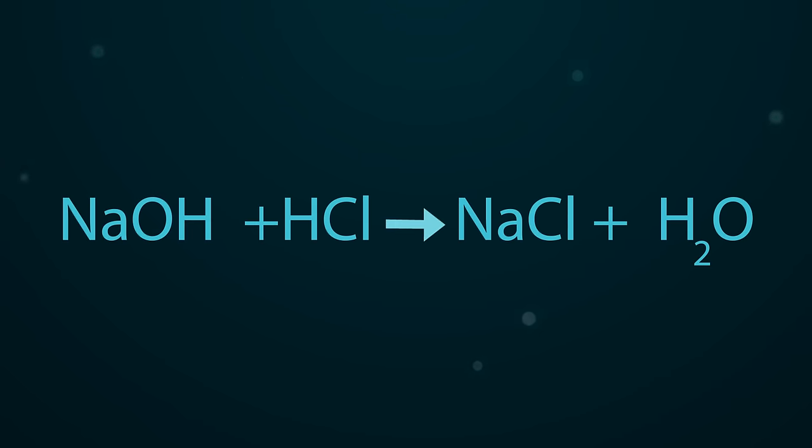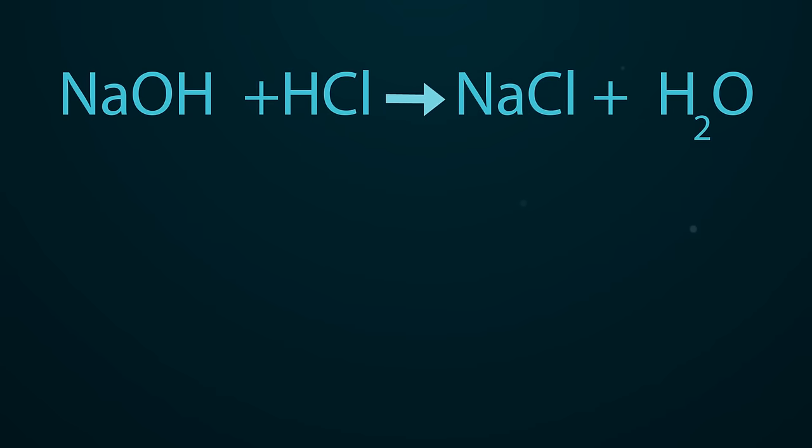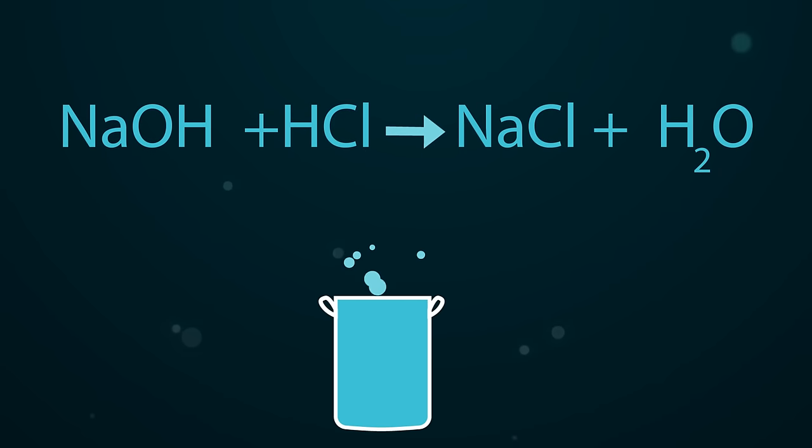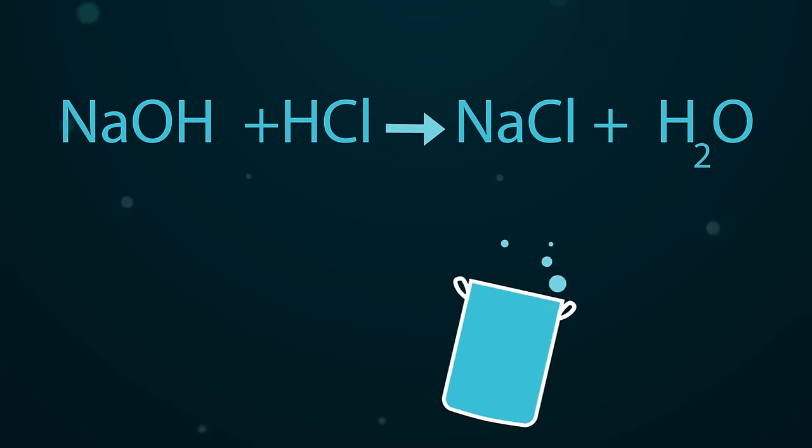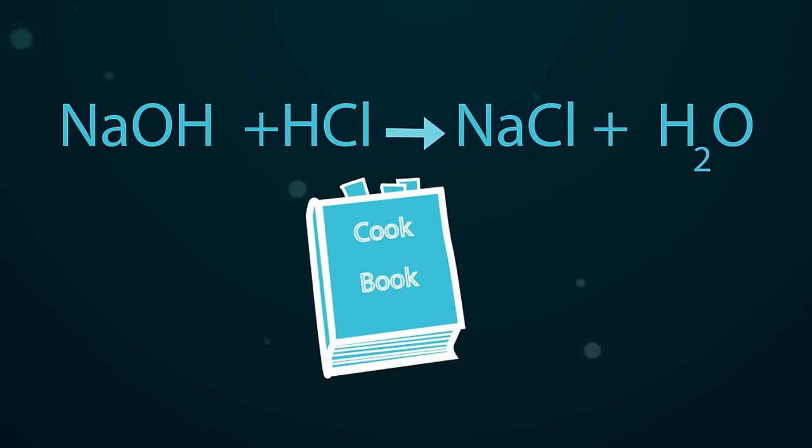Quite simply, a chemical equation shows the overall chemical change of reactants into products. It's a bit like a detailed cooking recipe, but where all the ingredients and all the products are written down, even the ones you can't necessarily see.